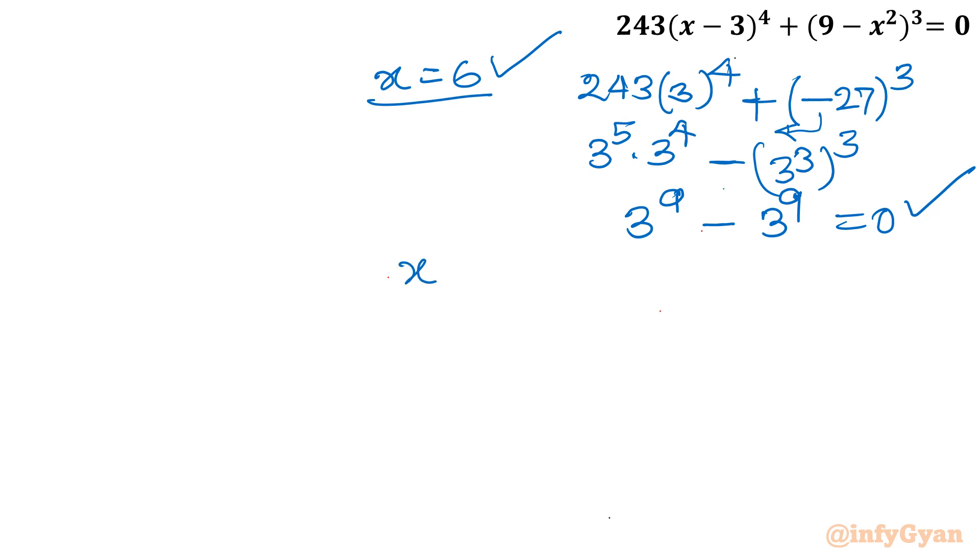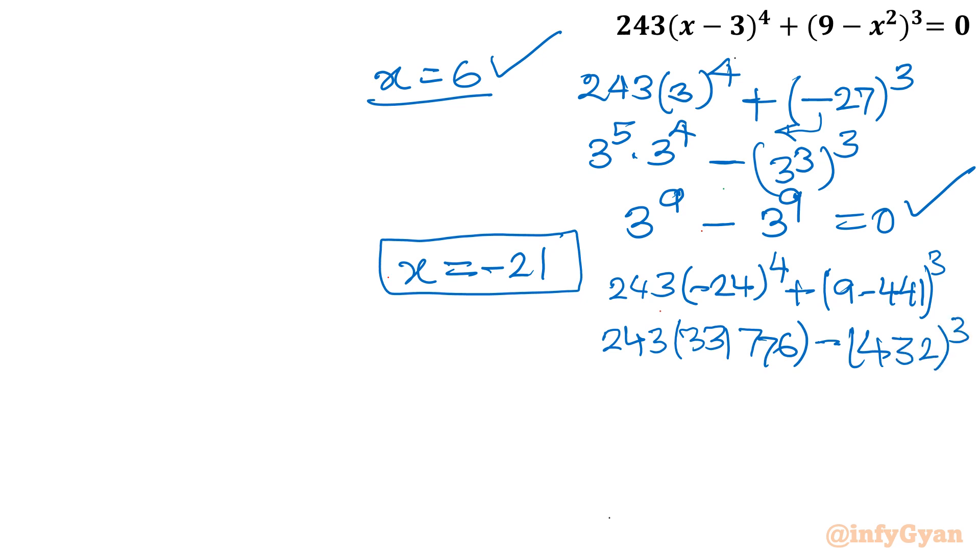Now come to our last verification for x is equal to minus 21. Let me put all the values. 243(x-3), so minus 21 minus 3 is minus 24 to the power 4 plus 9 minus x squared gives 441 whole cube. Now it will become 243 times 24⁴ is 331,776. So I'll write minus sign and it will come out 432 whole cube. Minus will be outside because power is odd. Once you will take the product of these two numbers, it will be 80,621,568. And this cube if you will calculate it will come out the same 80,621,568. So both values will cancel out. It will come out 0. And this value is also verified.